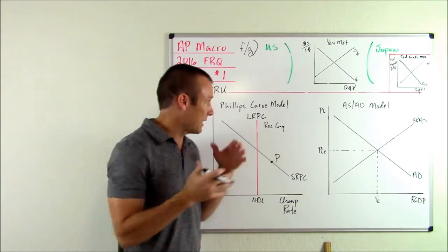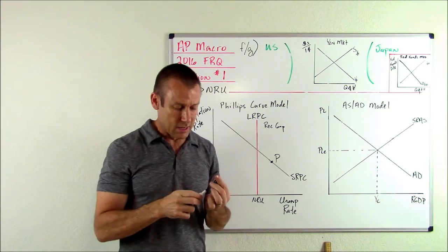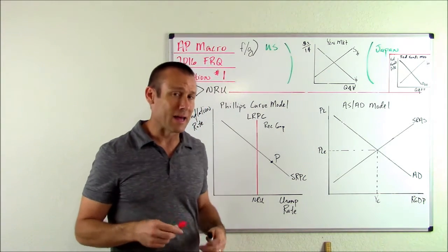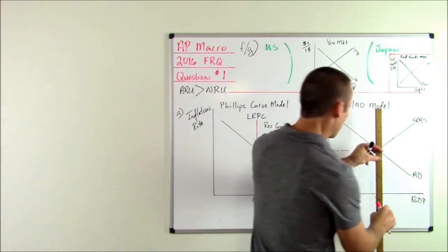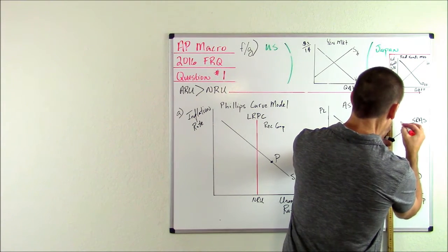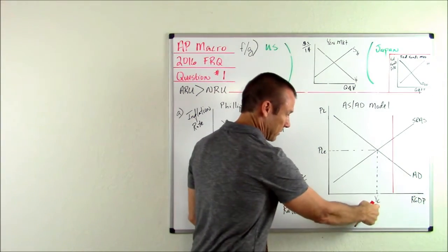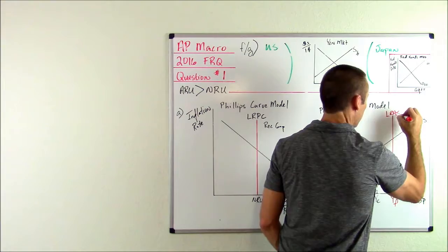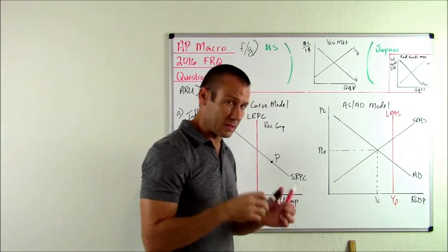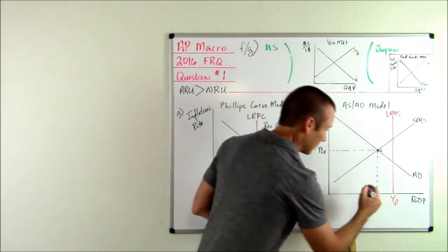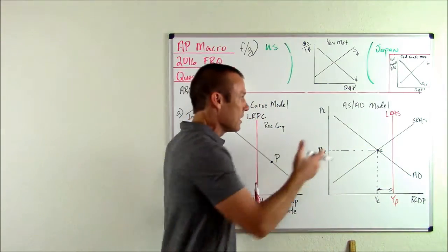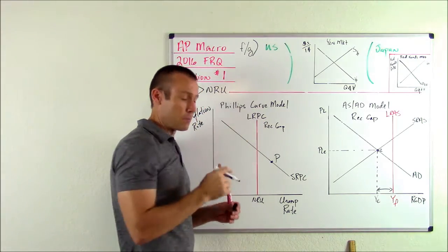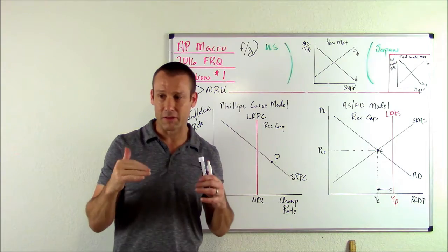I also put an AS-AD model alongside because I like to link these two models together. In a recessionary gap, my LRAS curve is to the right of my equilibrium output — that's how much we're producing right now. Full employment output YF is greater. The distance between current output and YF is the recessionary gap. So: recessionary gap = right-hand side of the LRPC and left-hand side of the LRAS.